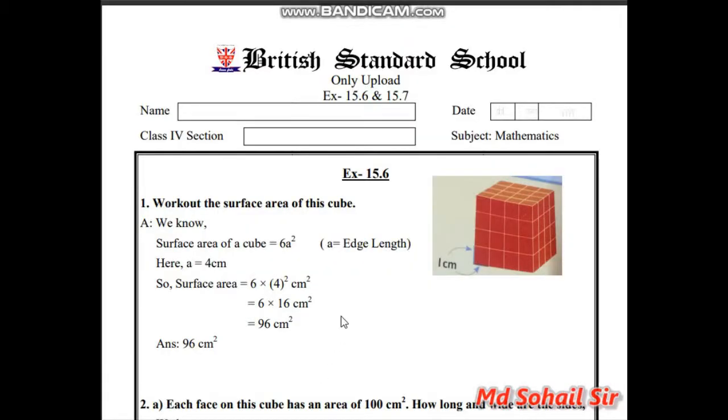First, 15.6. These are about 3D shapes, surface area, volume. 3D shapes, you have to remember that they have length, width, and height. Not only two, three sides, right?